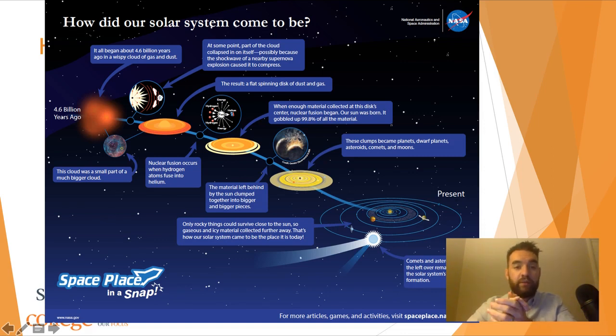Nuclear fusion occurs when hydrogen atoms fuse into helium, we know that. This started to happen in the middle of this cloud. When enough material collected in the disk's center and nuclear fusion began, that's when our sun was born. A new star formed in the middle of this flat spinning cloud. This new star, which is our sun, gobbled up 99.8% of all the material that was in that cloud. The rest of our solar system was made with this tiny amount of material.